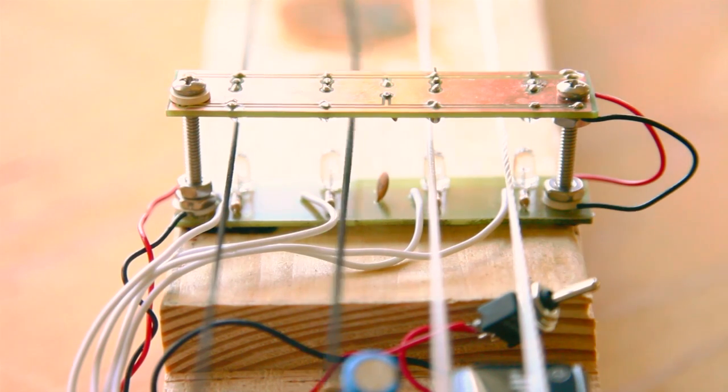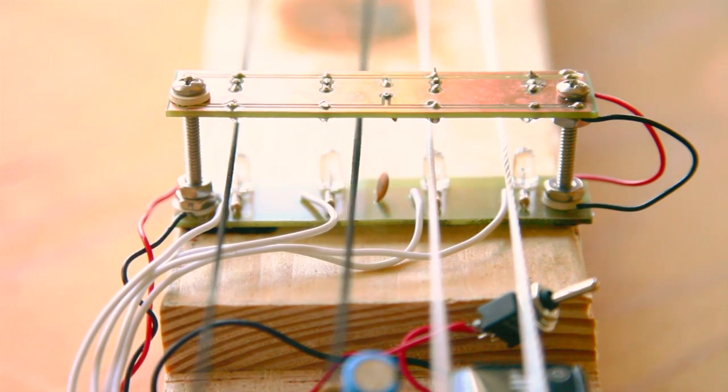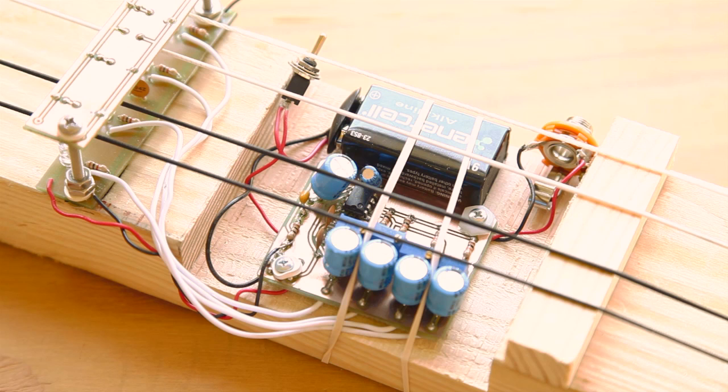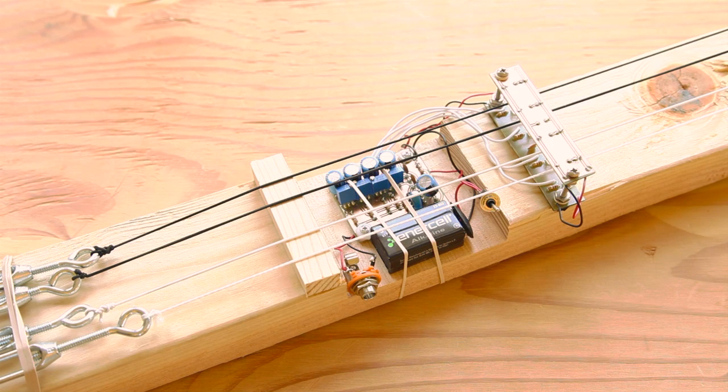The vibrations in the string produce interrupted waves of light, passing from the emitter to the detector diodes. These waves, in turn, are eventually converted to sound by way of the LM386 op-amp and the circuit's audio output. Converting light to sound? How cool is that?